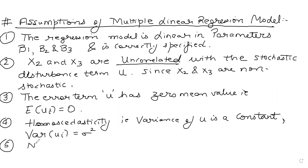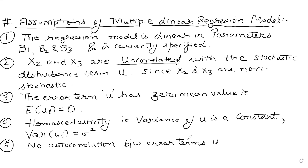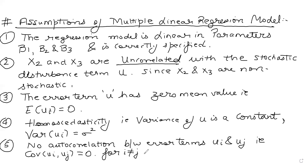Fifth assumption: no autocorrelation between the error terms Ui and Uj. That is, Cov(Ui, Uj) = 0 for i ≠ j. The two disturbance terms are uncorrelated — they do not follow any pattern. These five assumptions were also covered in our lectures on the two-variable linear regression model.